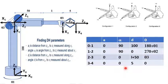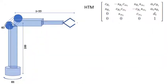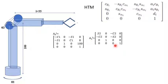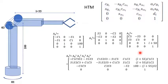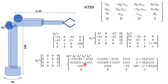Once we have the DH table, we can compute the homogeneous transformation matrices. This gives us A01, A12, A23, and A34. Multiplying all four matrices together gives the final homogeneous transformation matrix.